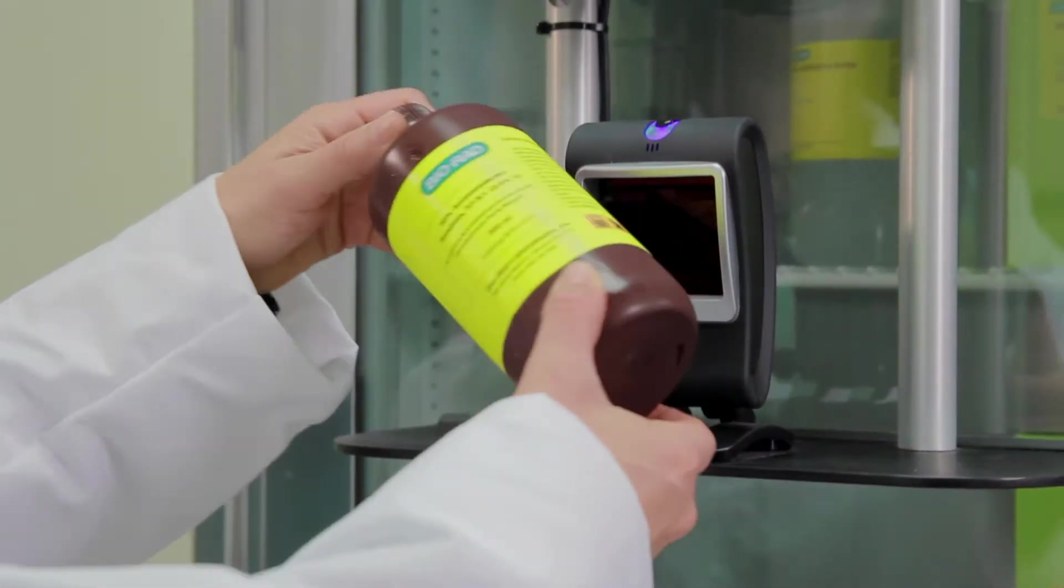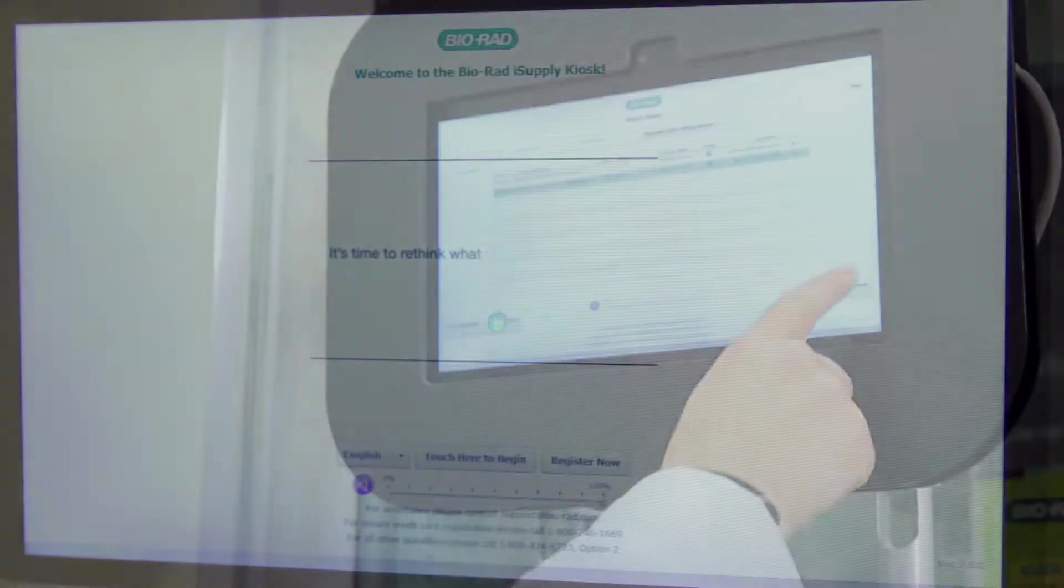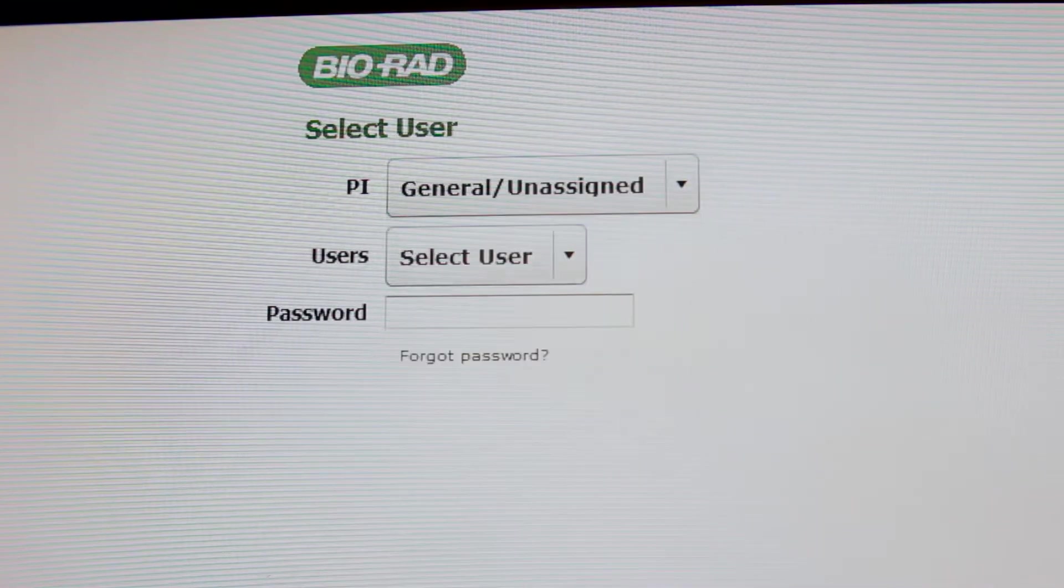You will use the supply center kiosk tablet and barcode scanner to perform inventory. First, you will log into the supply center using your administrator login credentials.